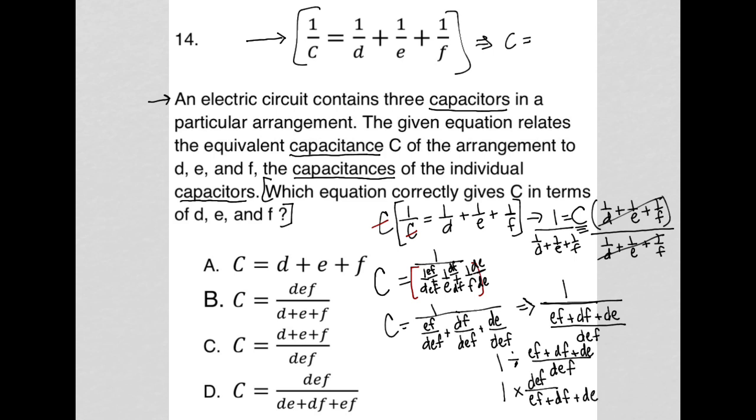And since it's just 1 times that, then that's really just the answer. I don't really need the 1 because the 1 isn't doing anything. So C is equal to DEF over EF plus DF plus DE. When I look at my answer choices, that looks a lot like choice D to me. So choice D is the correct answer to this question.